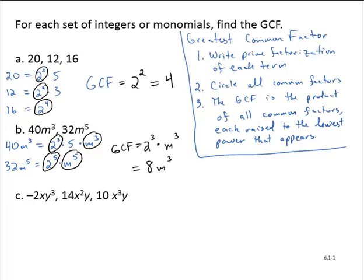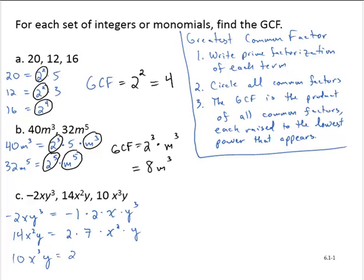Exercise C. We're asked to find the GCF of negative 2xy to the third, 14x squared y, and 10x cubed y. So let's start with some factorizations. Negative 2xy to the third is negative 1 times 2 times x times y to the third. 14x squared y is 2 times 7 times x squared times y. And 10x cubed y is 2 times 5 times x cubed times y. Circling all common factors: 2 is common, x is common, and y is common.